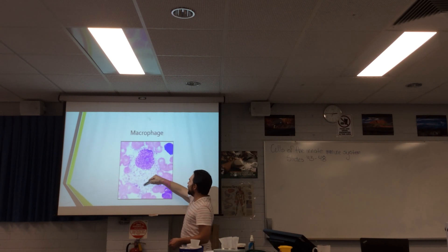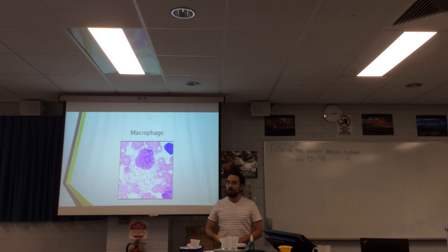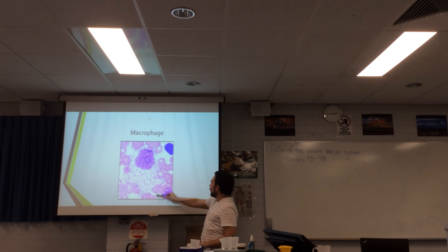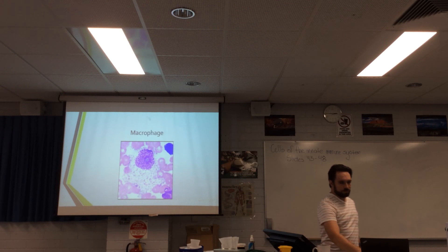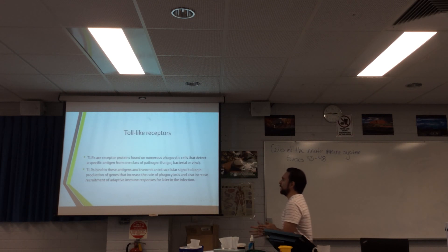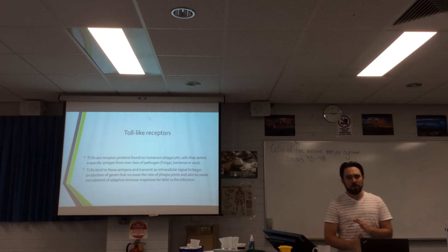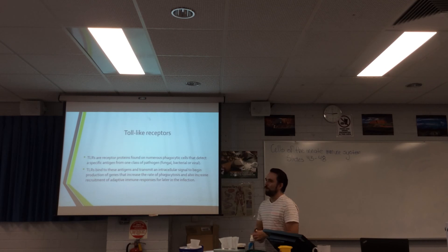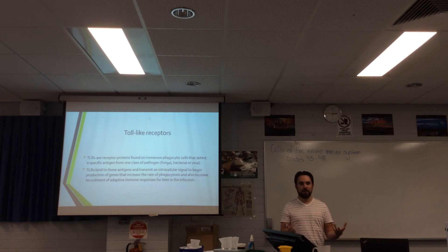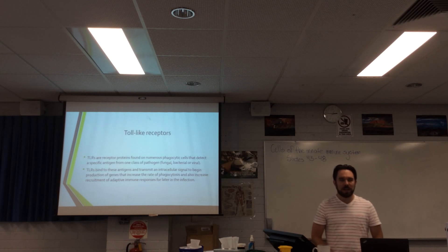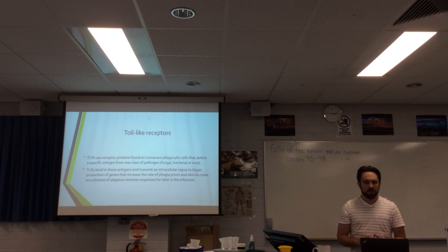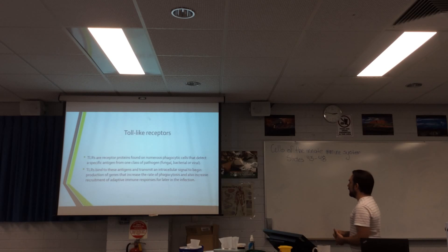Here we have a histological image of a macrophage — you can see peculiar structures around it, potentially bacterial or secretions, with the macrophage in the centre surrounded by red blood cells. TLRs are receptor proteins found on numerous phagocytic cells, not just macrophages. They detect a specific antigen from one class of pathogen — fungal, bacterial, or viral. TLRs bind to these antigens and transmit an intracellular signal to begin gene expression that increases the rate of phagocytosis and recruits adaptive immune responses.